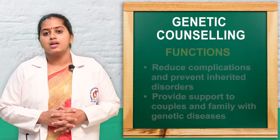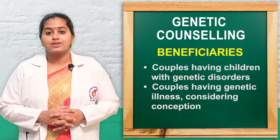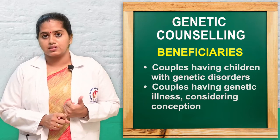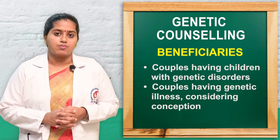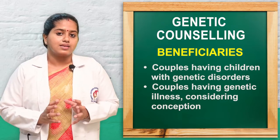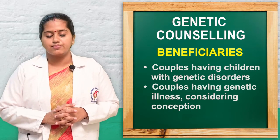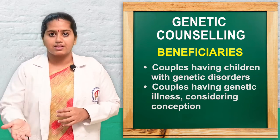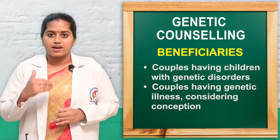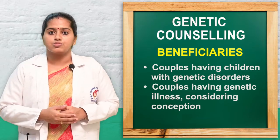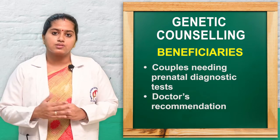The beneficiaries or indicators for genetic counseling include: first, couples who have a child with genetic illness — any inborn error of metabolism, cancers, or other gene-related diseases. This group benefits from genetic counseling to prevent a second or subsequent child from getting genetic illness. Second, couples who have any genetic illness and want future conception or pregnancy can go for genetic counseling.